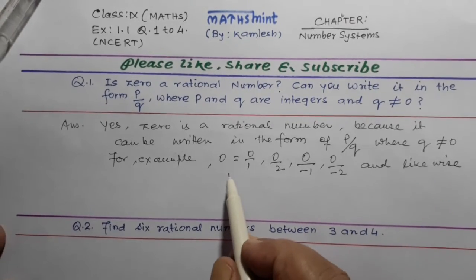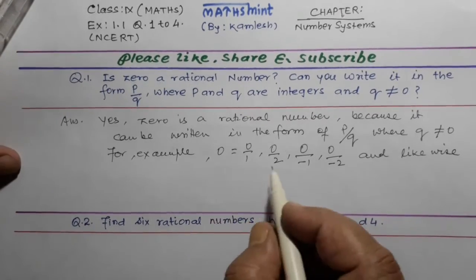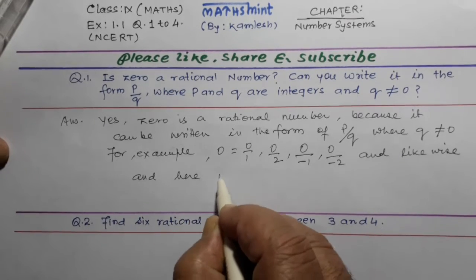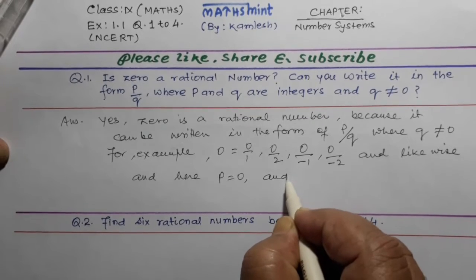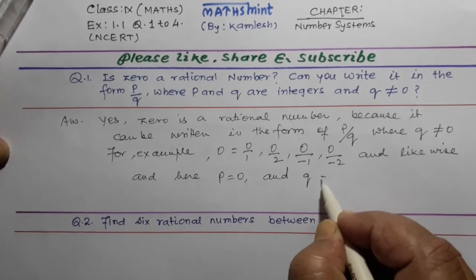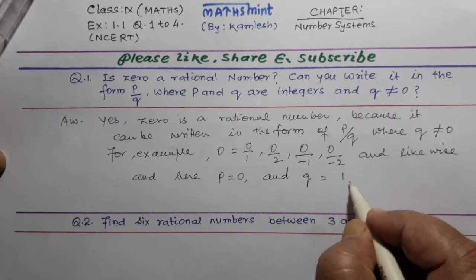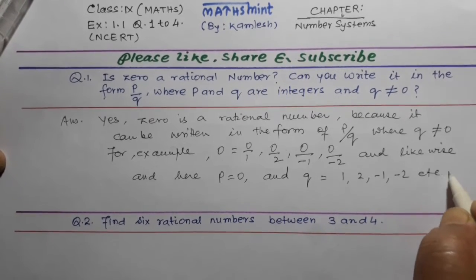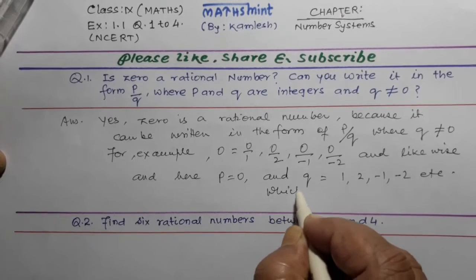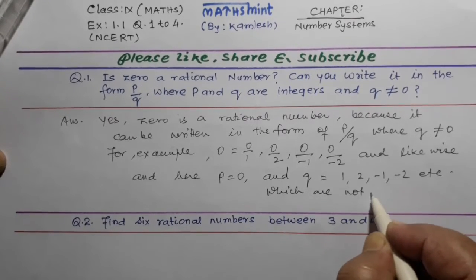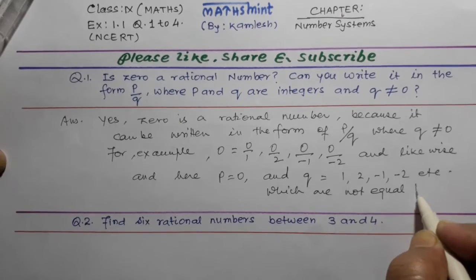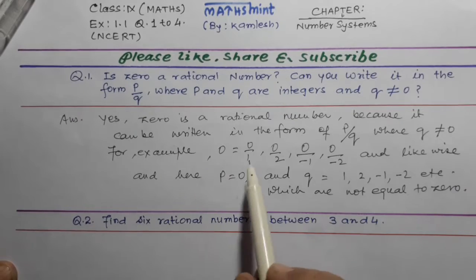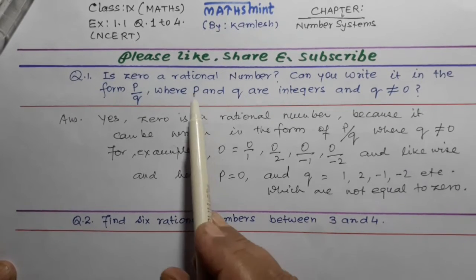Ham likh sakteh iska behalu — zero ke barawar hi hoga. Here P is equal to zero and Q is equal to one, two, minus one, minus two, etc., which are not equal to zero. This is the condition. What can we say? Zero is a rational number.